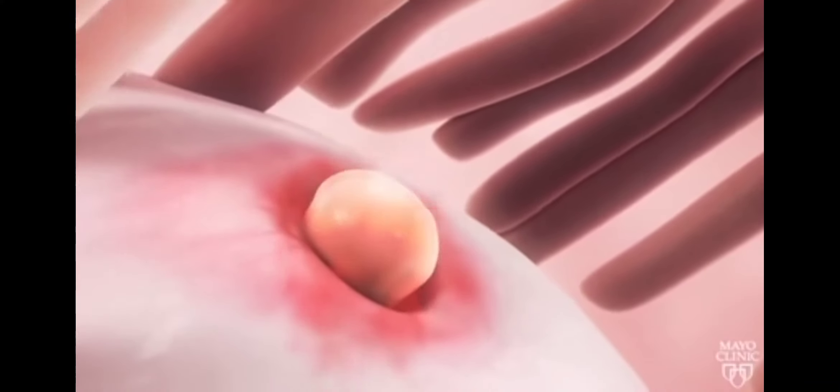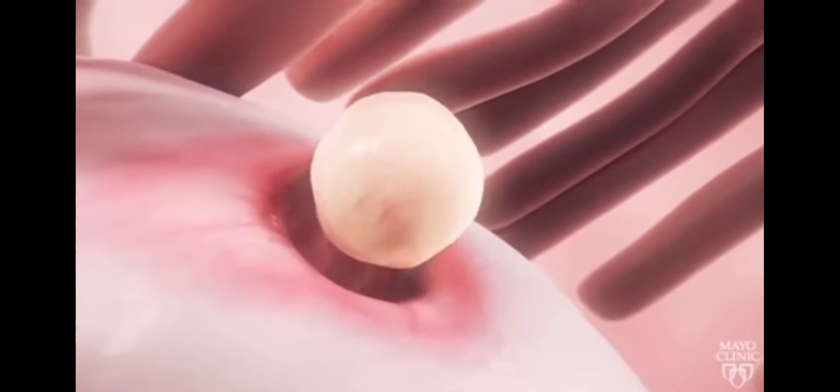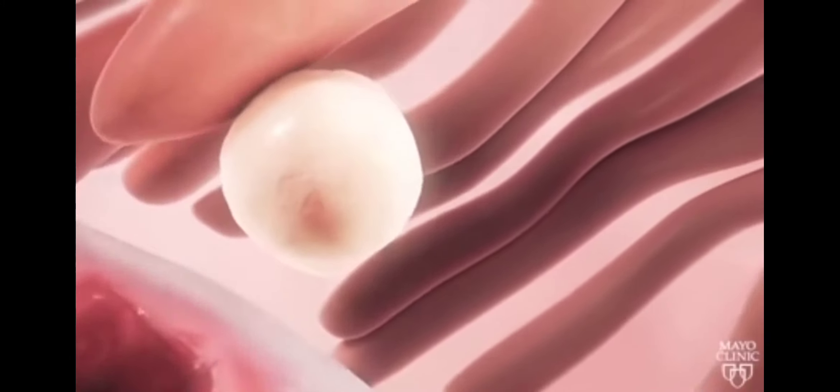The wall of the ovarian follicle ruptures at the surface of the ovary. The egg is released. Finger-like structures, called fimbriae, sweep the egg into the neighboring fallopian tube.